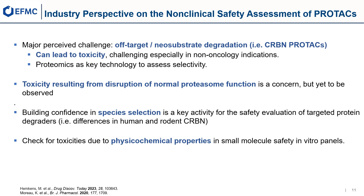Proteomics is the key technology for investigating the general selectivity of a PROTAC. Toxicity resulting from disruption of normal proteasome function by a PROTAC is a concern, but has not been observed, most likely due to the very large buffering capacity of the ubiquitin proteasome system, as its fundamental proteins are quite abundant in cells. Building confidence in species selection for toxicity studies is a key activity for safety evaluation of targeted protein degraders. For example, the human teratogenic effect of thalidomide could not be observed in rodent studies due to species differences in both CEREBLON and GSPT1. One should also check for toxicity of PROTACs due to their special physicochemical properties, such as high lipophilicity, in in vitro safety panels.